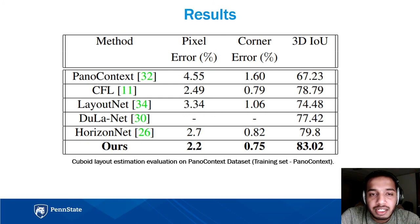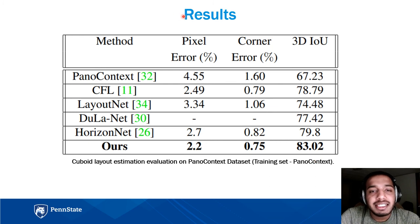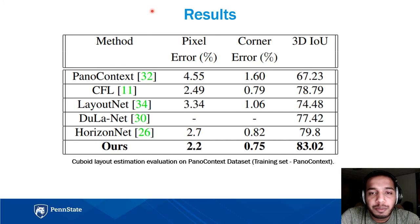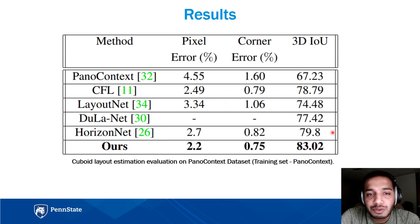We perform our evaluation on two benchmark datasets. The first is the Pano Context dataset, which consists of 5000 annotated cuboid room layouts. The panoramas are captured from indoor settings such as living rooms and bedrooms. Based on the 3D IOU evaluation metric, our method achieves a new state-of-the-art and outperforms all prior methods by 4% on the Pano Context dataset.